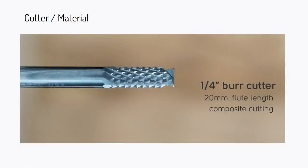Burr cutters are great for composites. Be careful with composites — there are safety precautions: wear a mask as they can produce some pretty nasty dust. Should you want to cut composites, this is the tool for the job. It works kind of like a rasp and will just clear its way through the material, actually getting you a pretty good edge. Just make sure you take care of that dust with good dust extraction and a good mask.